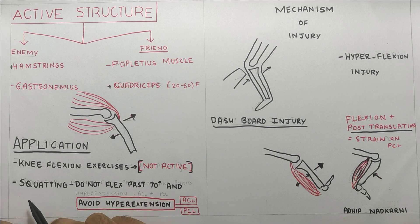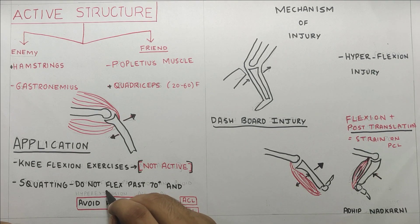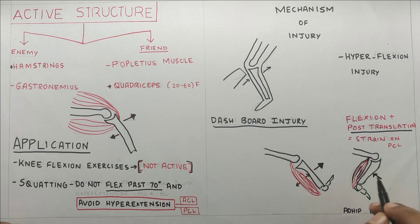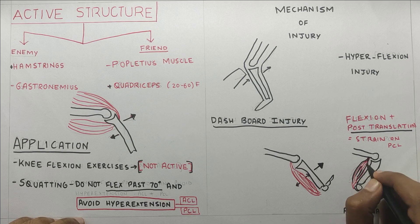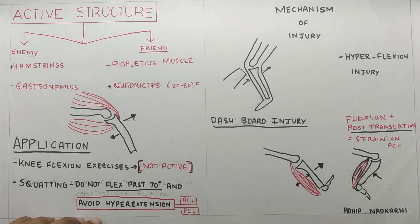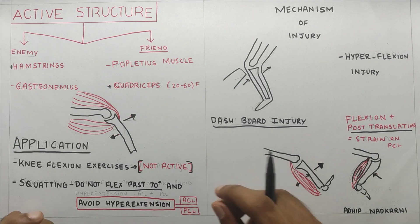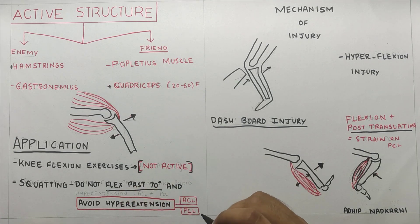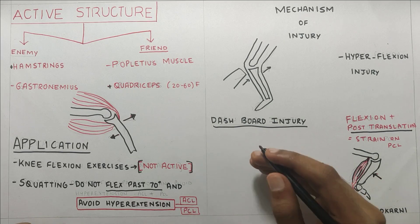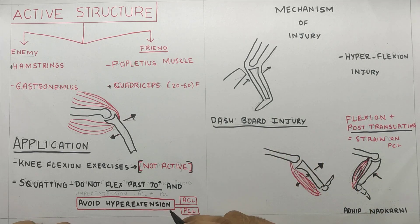Another point is squatting: do not flex the knee past 70 degrees. Flexion past 70 degrees should be avoided because with excessive flexion there will be posterior translation of the tibia, causing stress on the PCL. You should also avoid hyperextension as it causes both ACL and PCL strain. As we learned, PCL takes up 93% of the stress in hyperextension position, so hyperextension should be avoided at all costs.